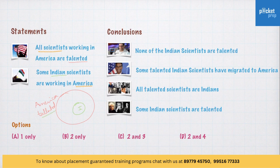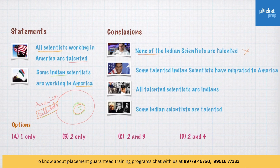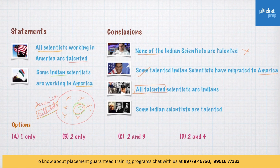Conclusion 1: None of the Indian scientists are talented. No — because there are some Indians in America and they are talented, so this is not correct. Conclusion 2: Some talented Indian scientists have migrated to America. Yes — there are some Indian scientists in America, so this is valid. Conclusion 3: All talented scientists are Indians. No — there are only a few Indians who are talented; there could also be Americans who are talented. So this cannot be accepted.